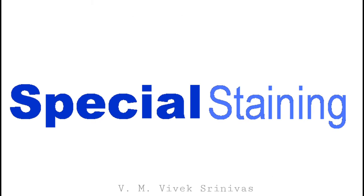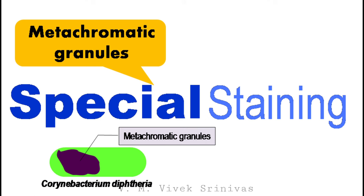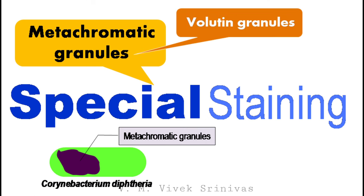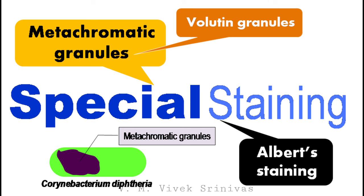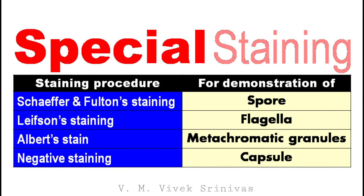Certain bacteria like Corynebacterium diphtheriae possess metachromatic granules inside the bacteria. These metachromatic granules, also called volutin granules, can be stained by Albert's staining technique. Here the granules are stained bluish-black and the cytoplasm of the bacteria are stained green. These are some of the special staining procedures used for the demonstration of structures like the spore, the flagella, the metachromatic granules, and the capsule.